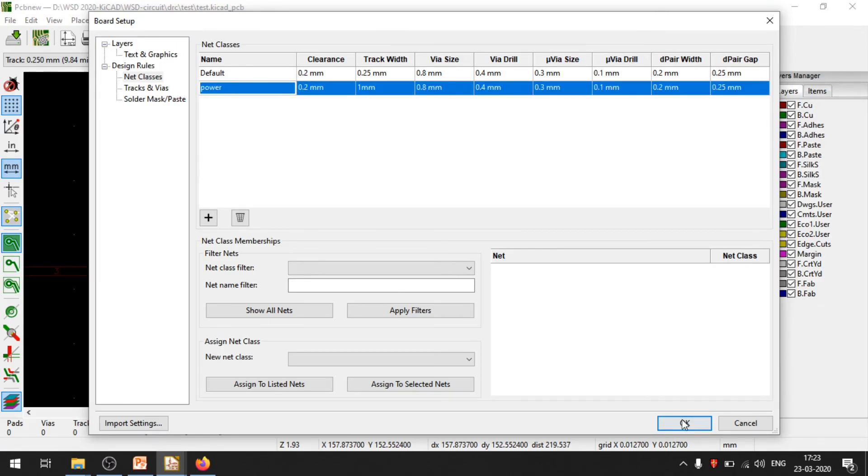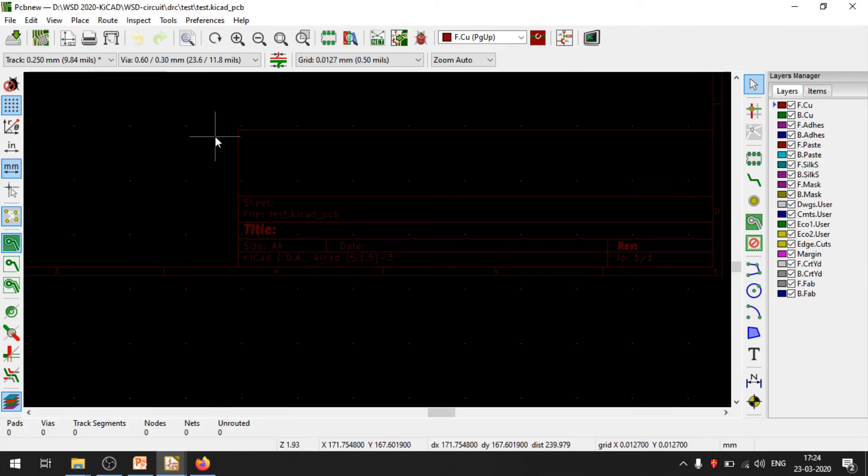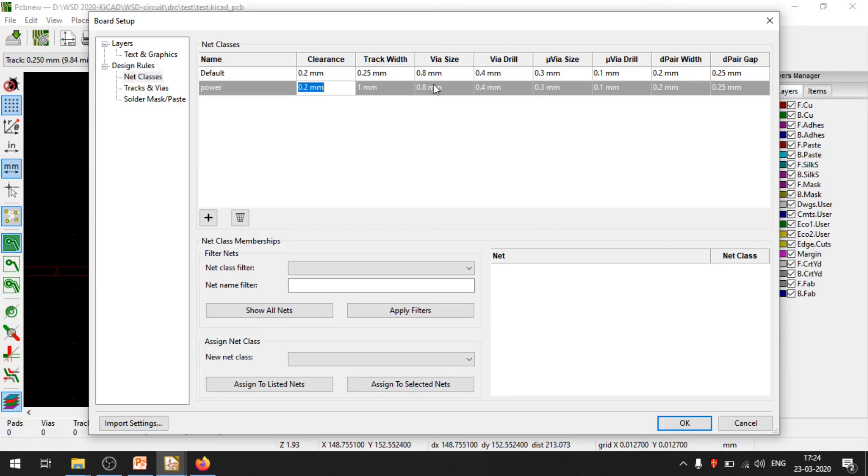You can set them here. So when you are routing, it will be easier for you to actually change the track width and even clearances can be changed. If you notice here, the net class, the clearance is 0.2 mm. That is the separation between the tracks. The rest we don't have to worry for the design that we are taking.